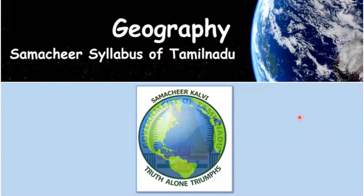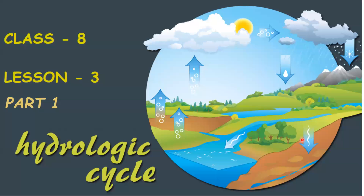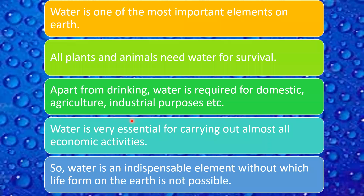Welcome to Geography Samachir Syllabus of Tamil Nadu, Class 8 Geography, Lesson 3, Part 1: Hydrologic Cycle. Hydro denotes water, and the hydrologic cycle is nothing but the water cycle.